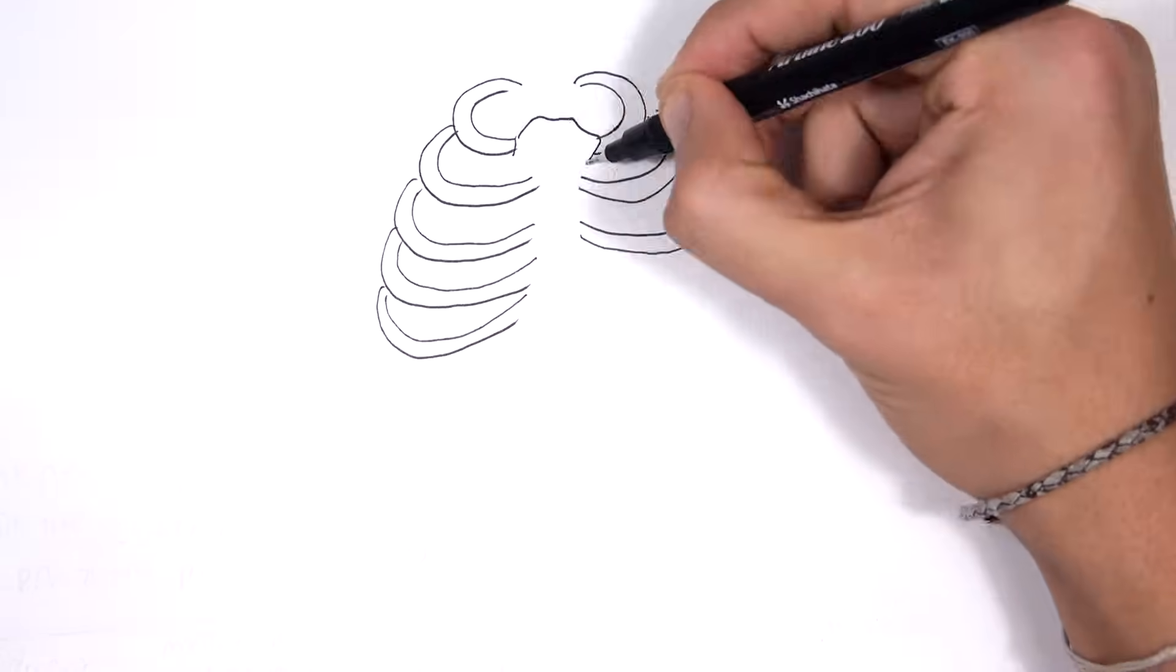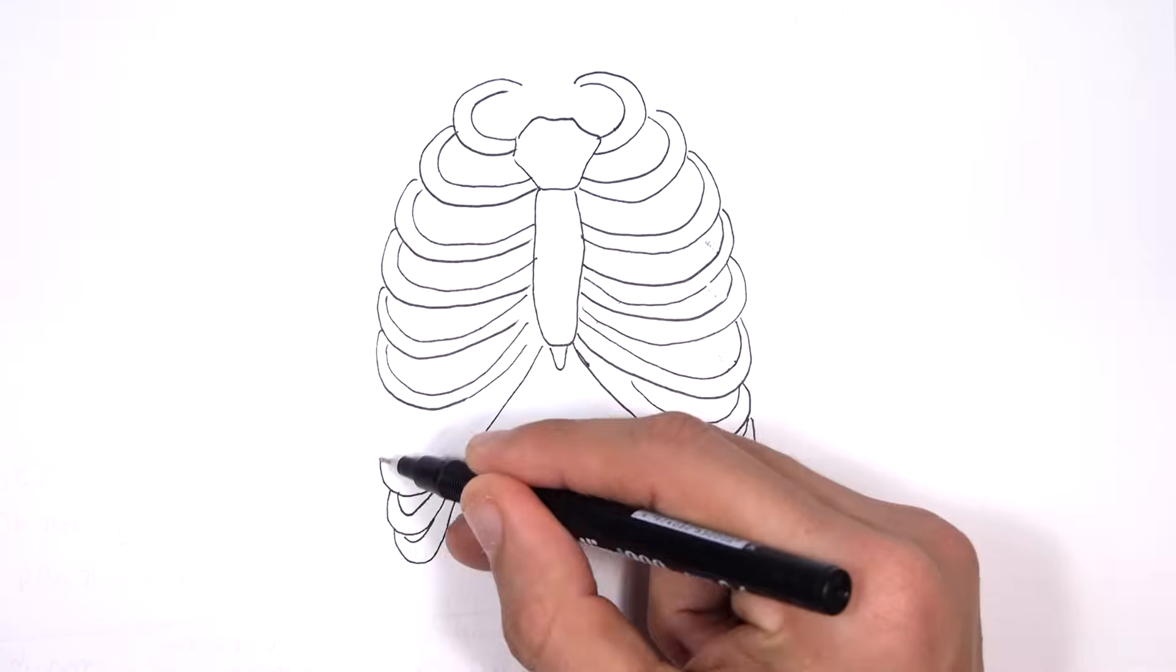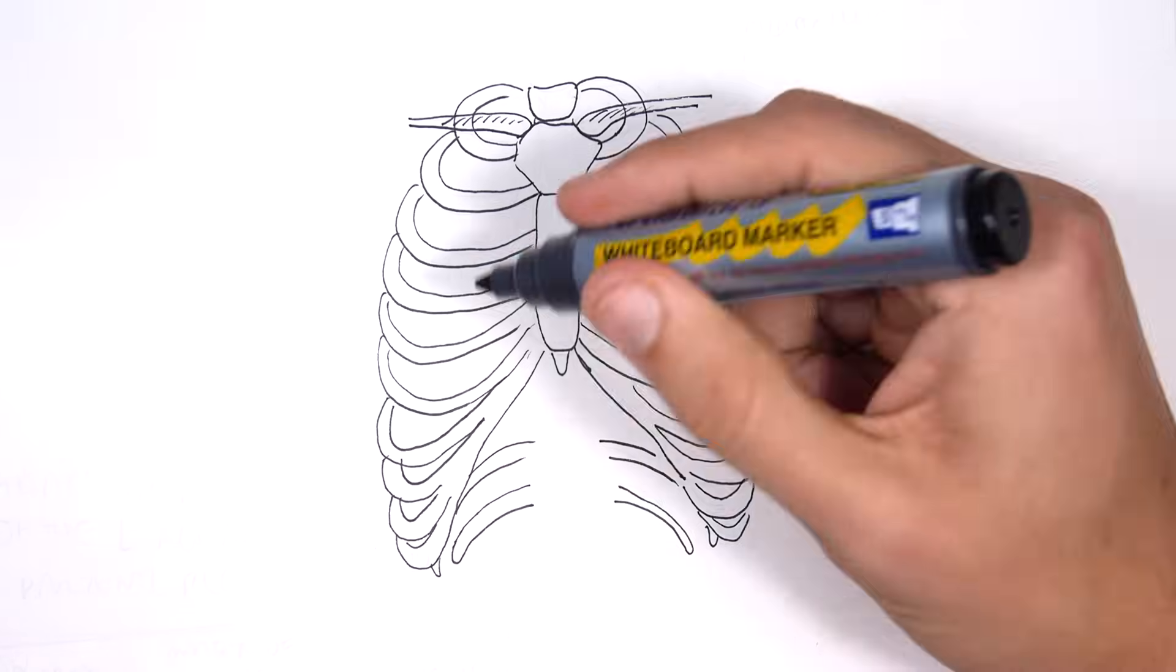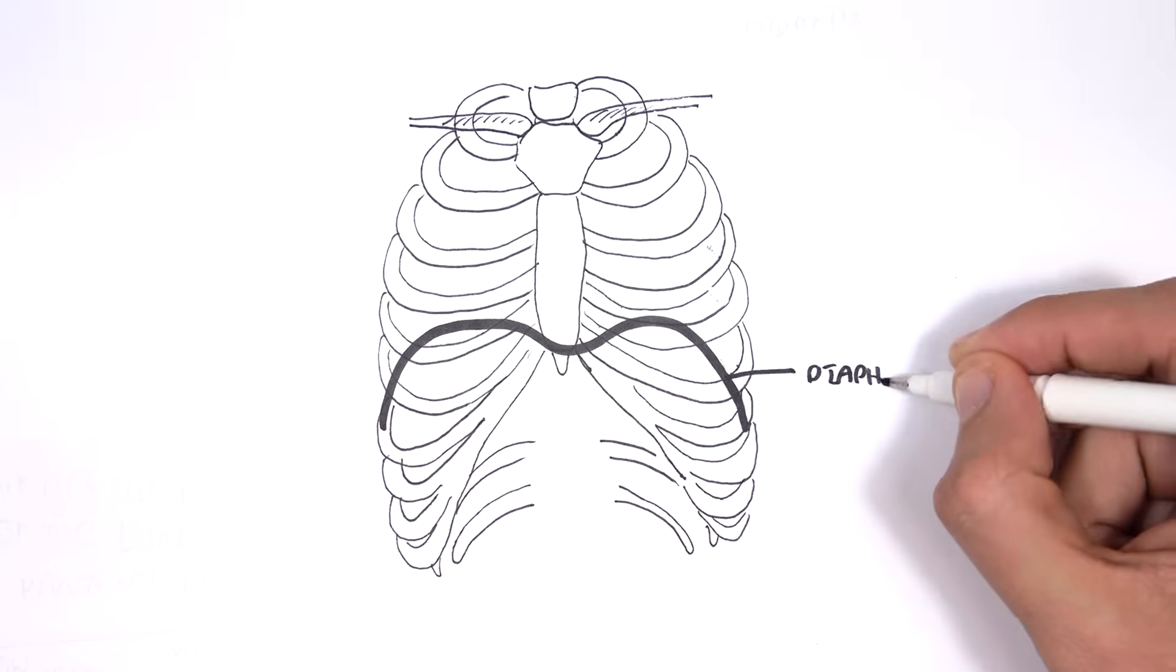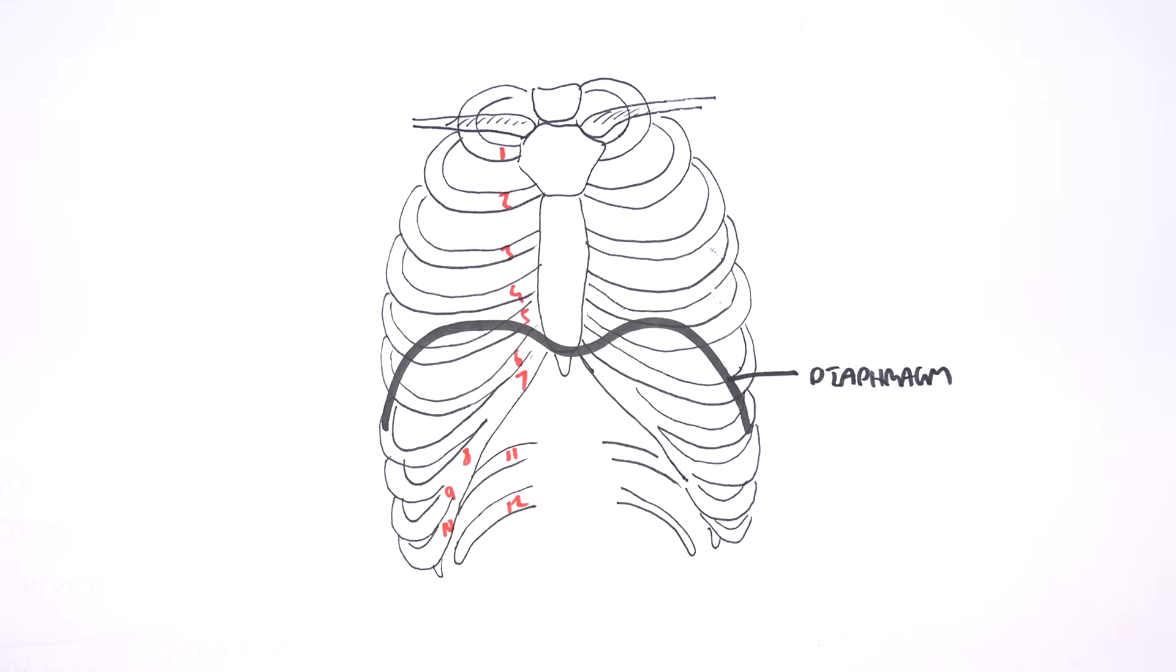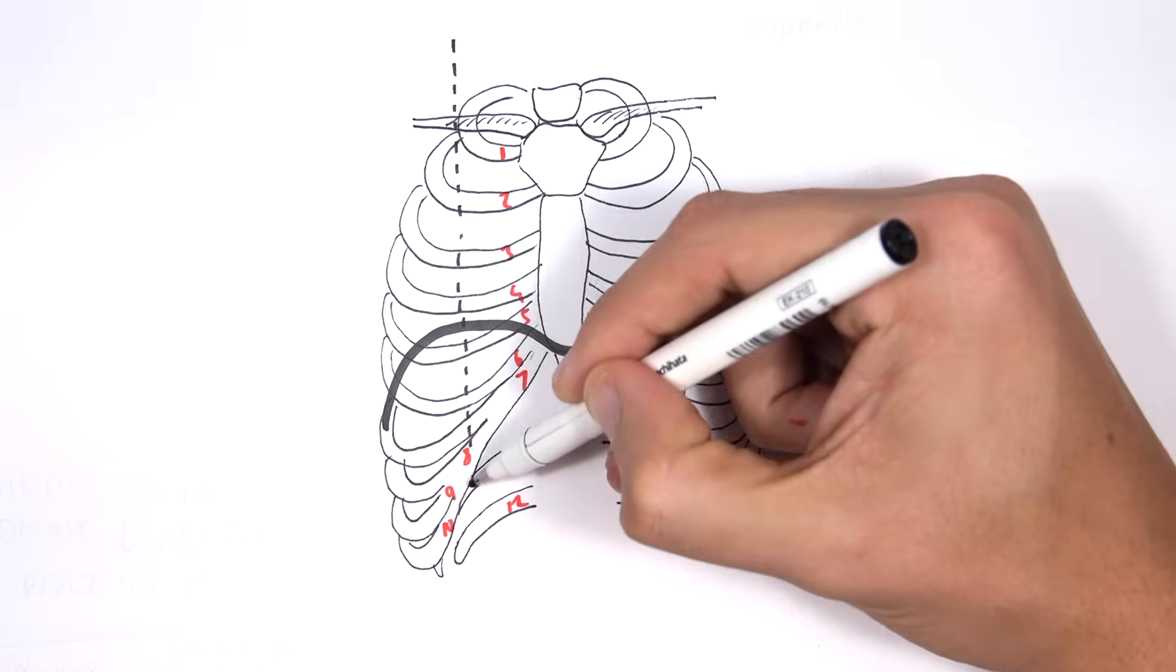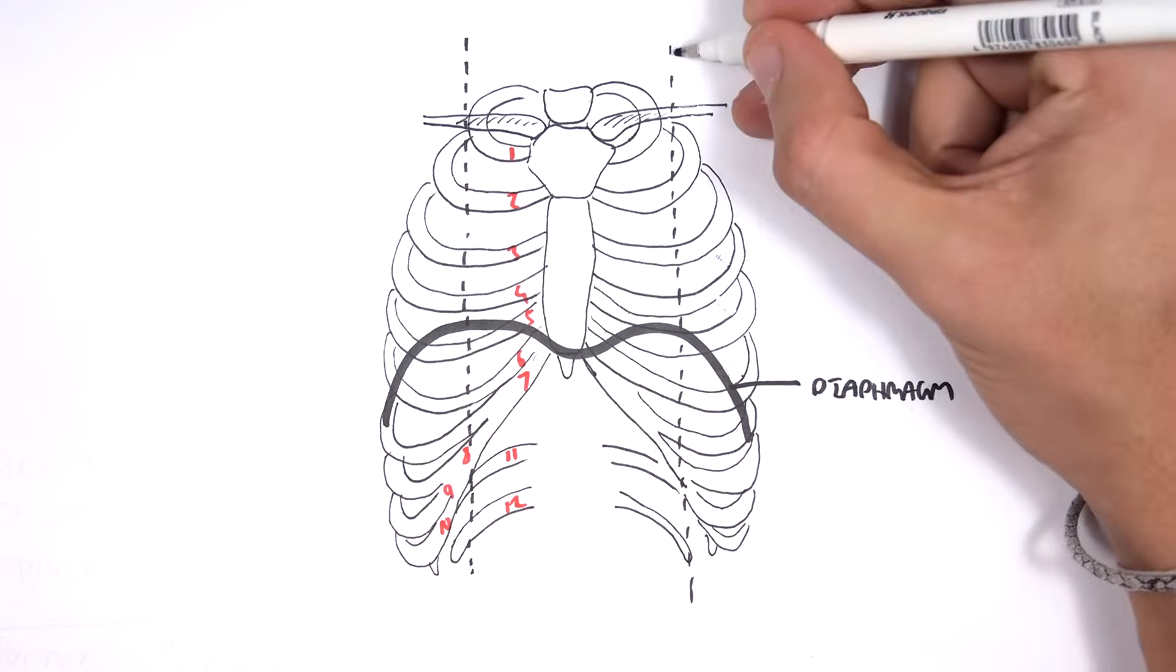Next let's look at where organs and other things lie in respect to the thoracic cavity. So this is an anterior view again. Now roughly along the fifth rib is where the diaphragm sits. Important landmarks to remember is the midclavicular, which is essentially the site from if we draw a line from the middle of the clavicle down. So this is midclavicular.